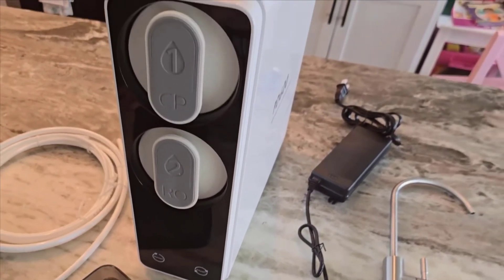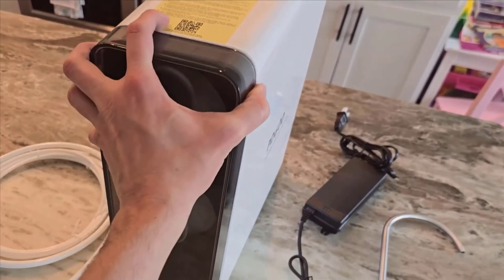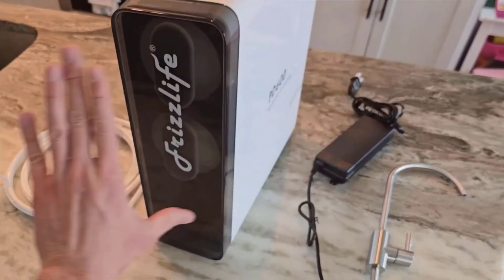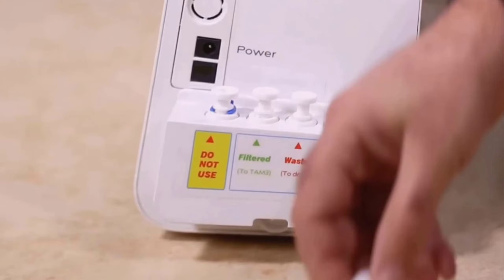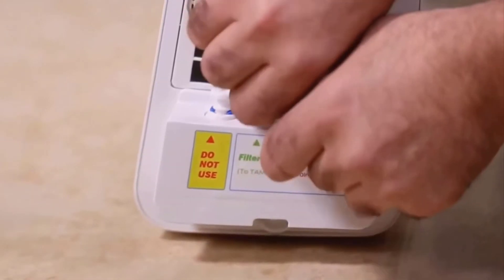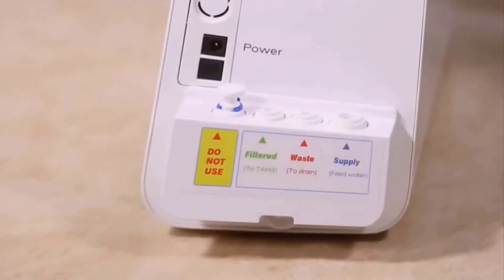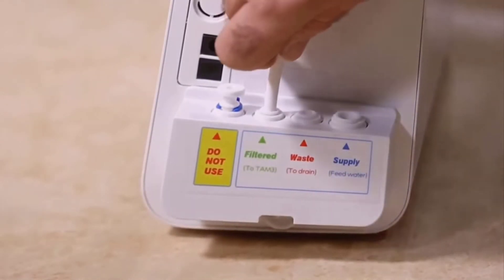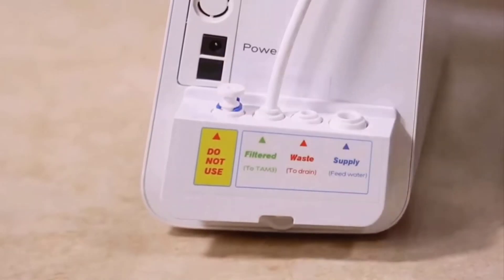Now, let's talk about design. Check out this sleek tankless design. It's not just about saving space under your sink, though it does that beautifully. It also means your water is fresher with no risk of secondary pollution. Traditional systems with tanks can sometimes harbor bacteria if not maintained properly. But with this tankless design, that concern is practically eliminated.